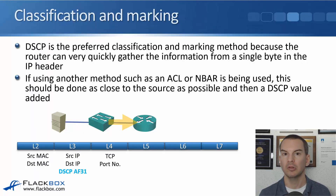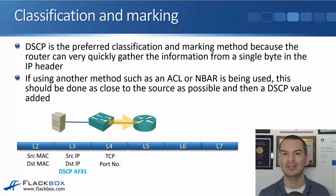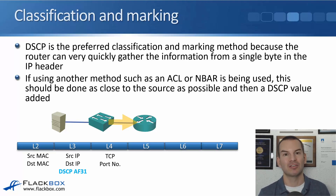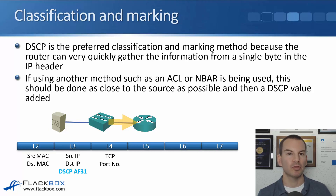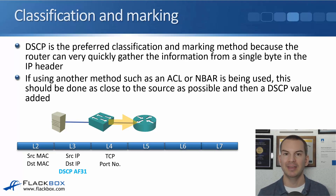Classification and marking alone doesn't actually do anything yet — it only puts a DSCP value in the packet but doesn't give it any different service. A common misunderstanding is that classification and marking alone means QoS is configured; it's not. You have to take an action based on that marking, which is usually queuing. The router or switch recognizes the traffic and then gives it a different type of service — that's what we'll cover in the next lecture.